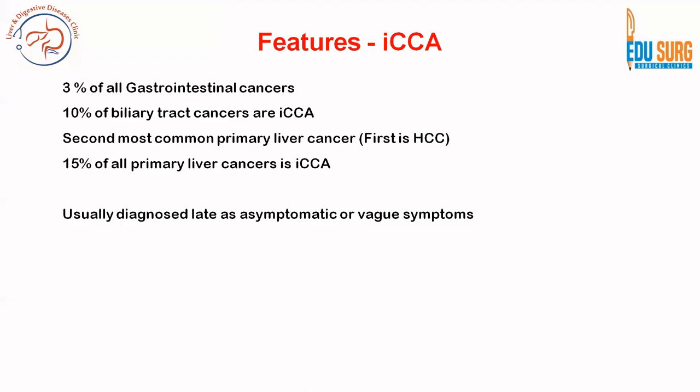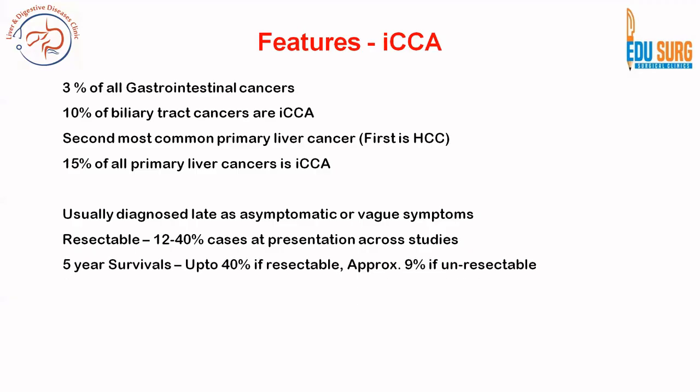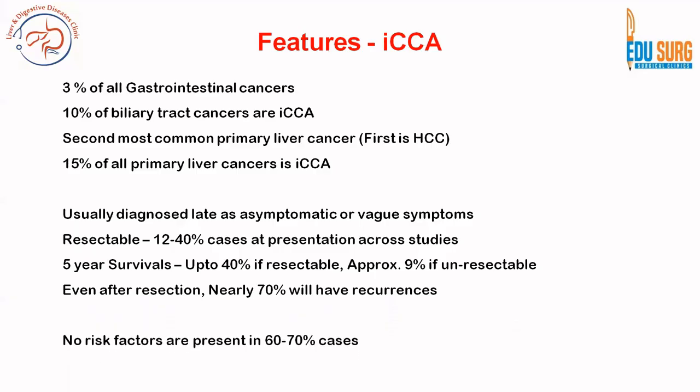These tumors are usually diagnosed late as they are asymptomatic or present with vague symptoms. Resectable cases are only 12 to 40%, so less than half of patients will be resectable. Five-year survival if not resectable is very dismal at 9%, whereas it is up to 40% if resectable. Even after resection, nearly 70% will have recurrences.